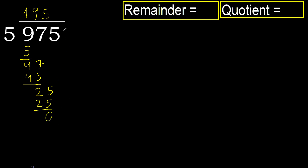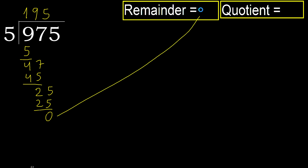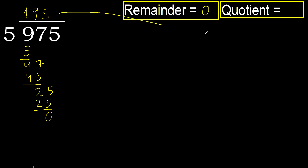Next, that is not a number, therefore finish it. 975 divided by 5 is 195.